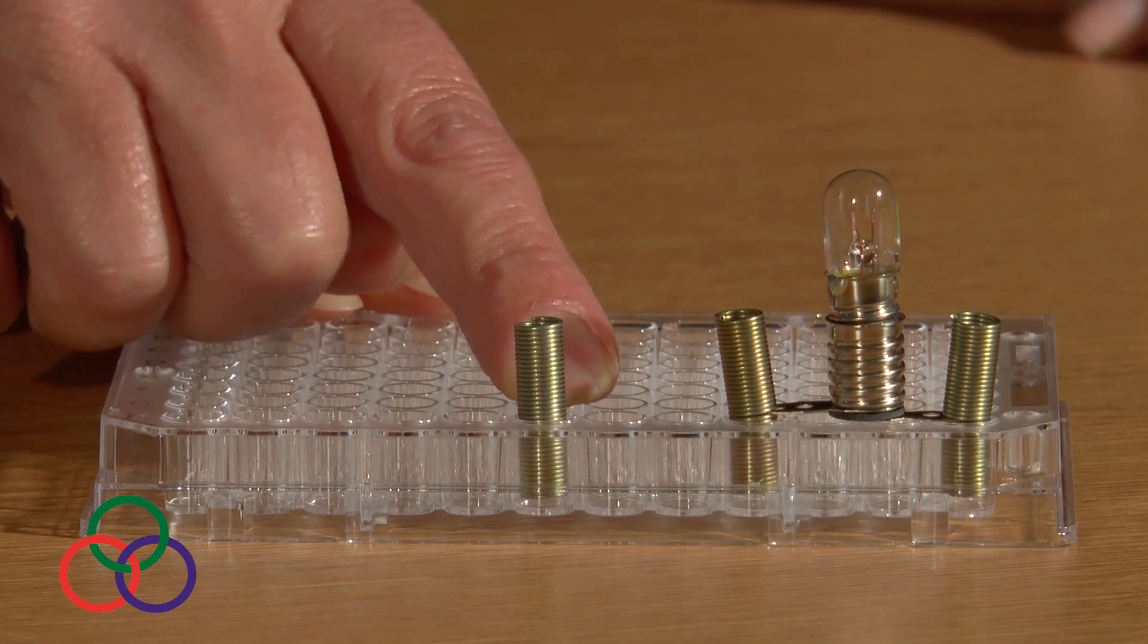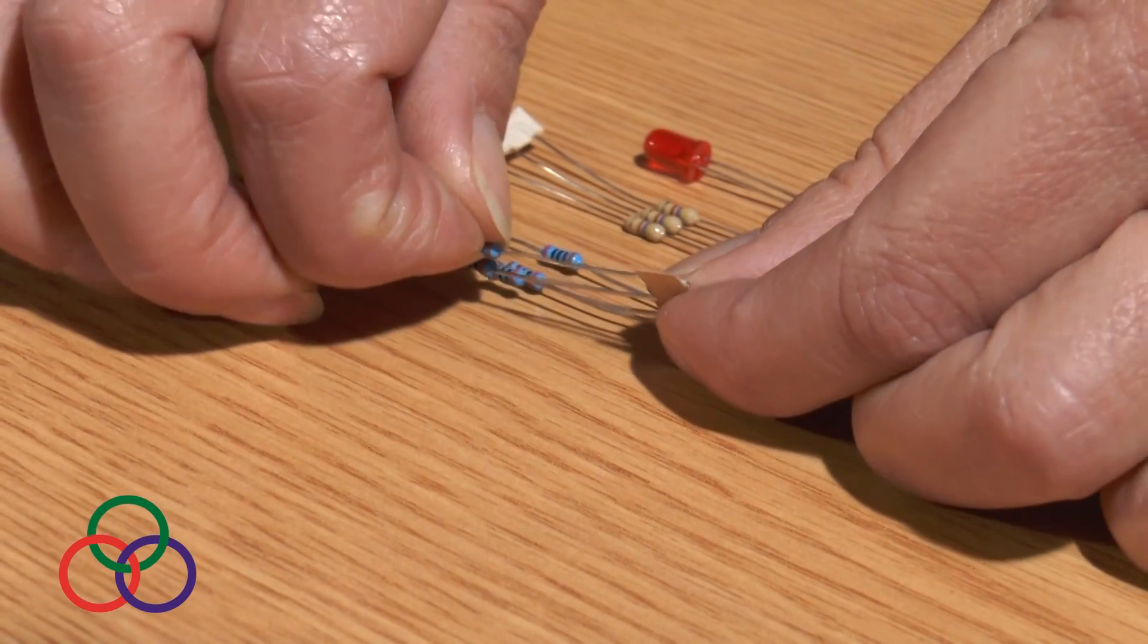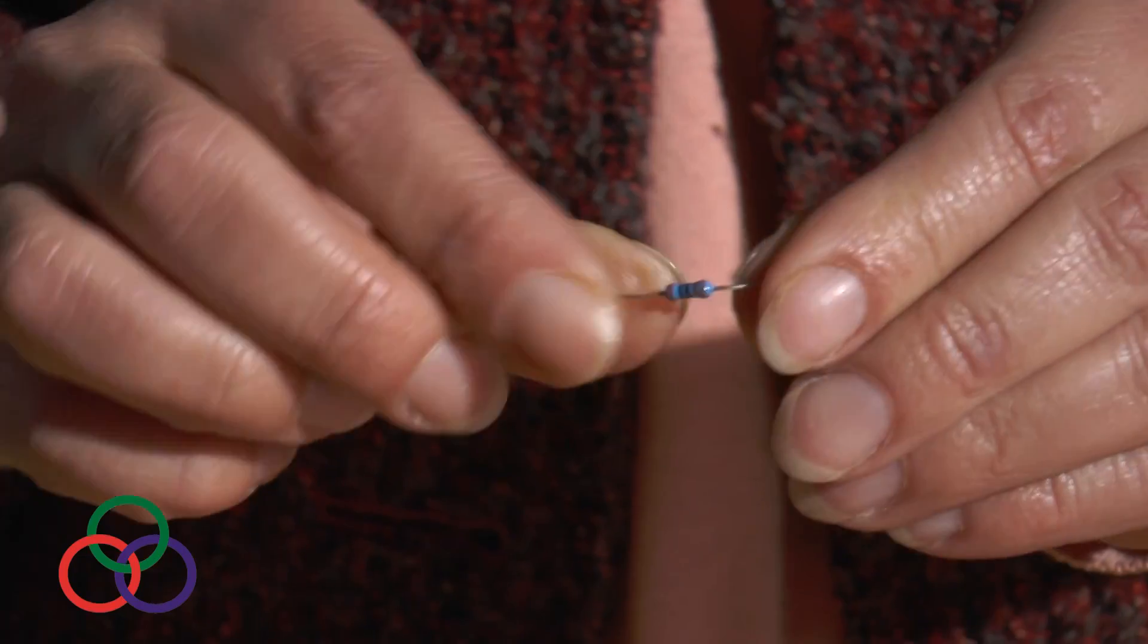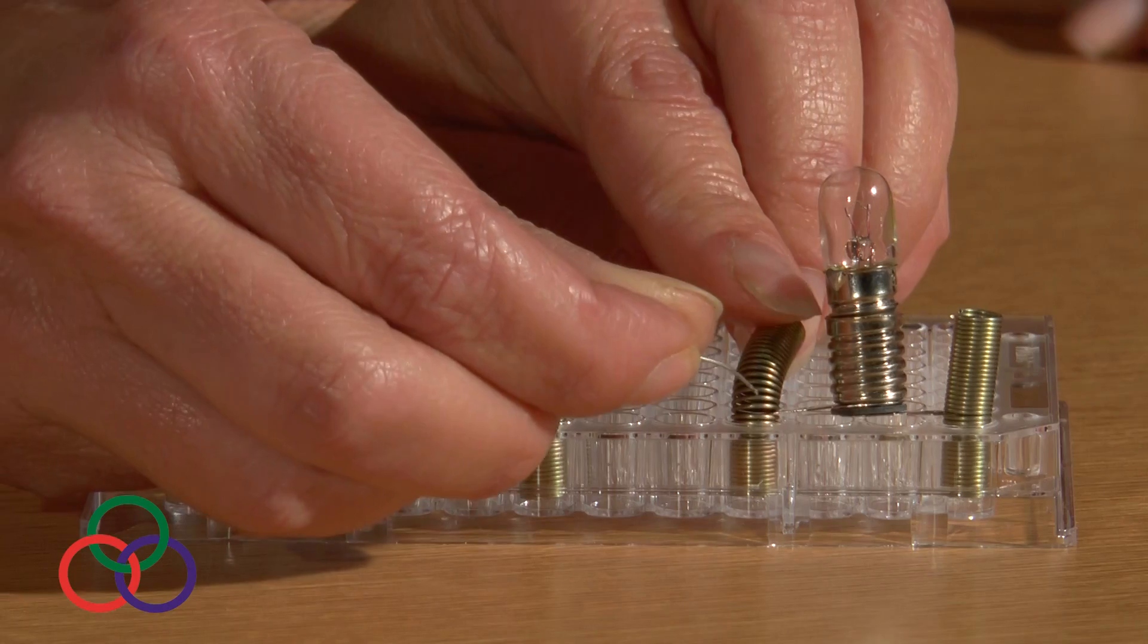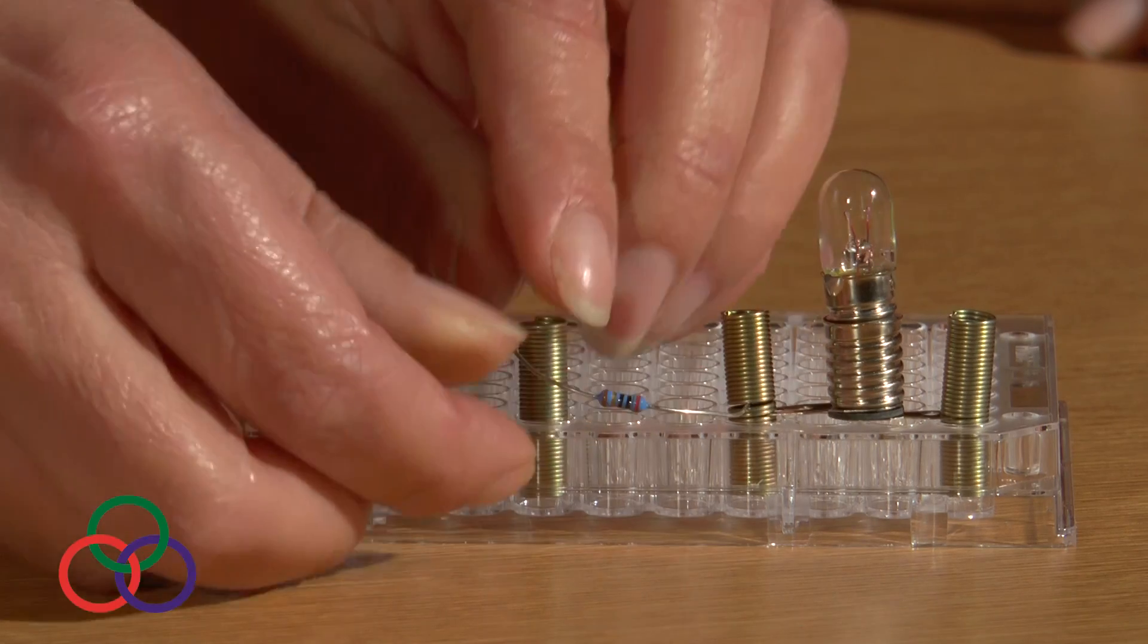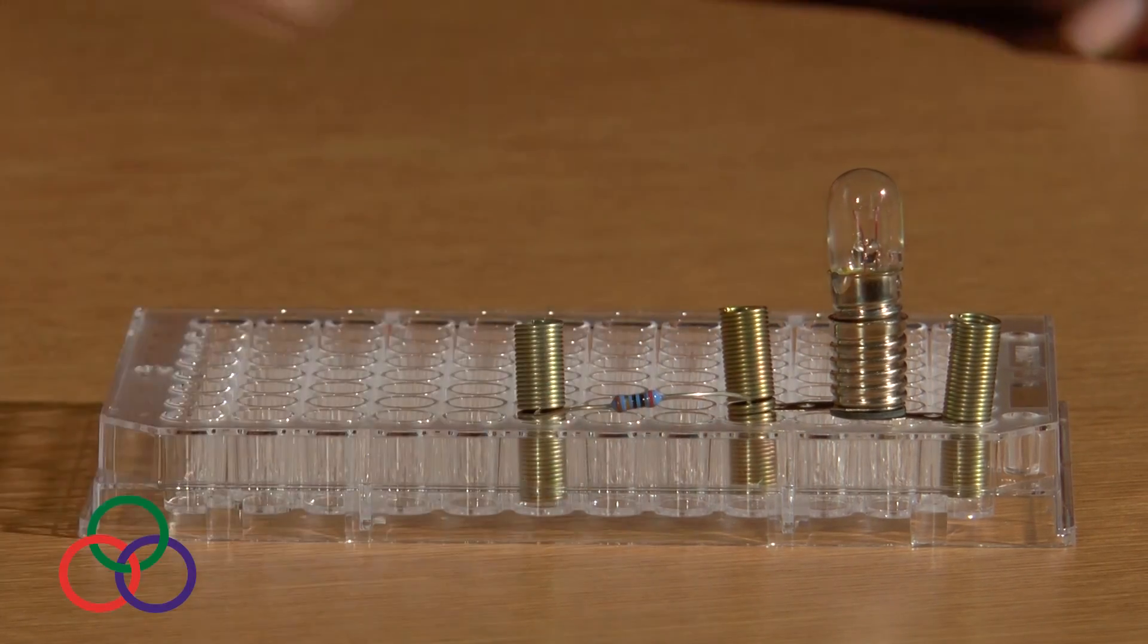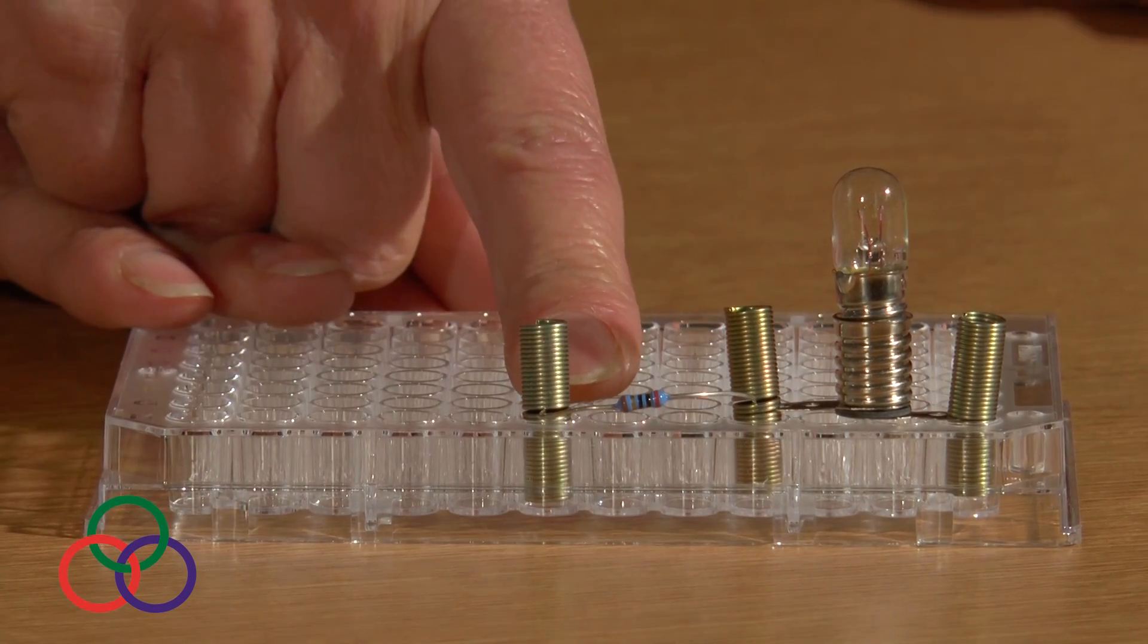If we want to connect next to the bulb something else in series, again we insert a spring, two holes apart again. Say now we want to connect a resistor. Here is a resistor. The resistor, you can bend its lead. There is no problem. So you can insert it. You bend the spring, insert the one lead, bend the other spring, insert the other lead. So we have now those two devices connected in series.